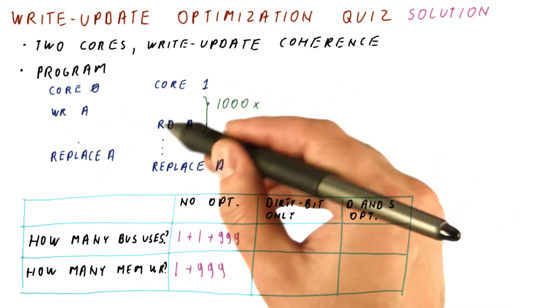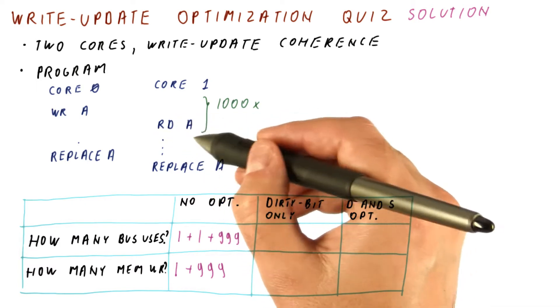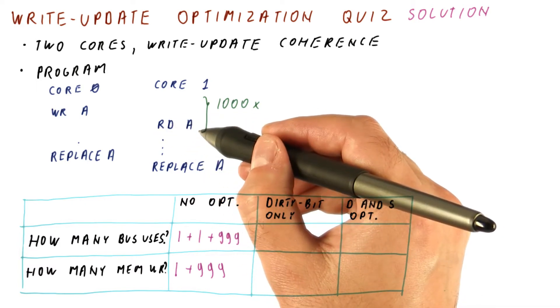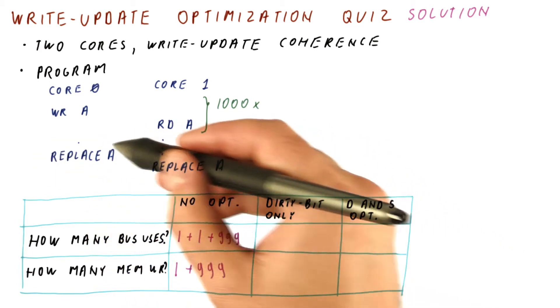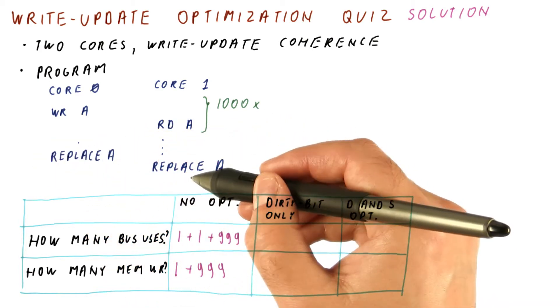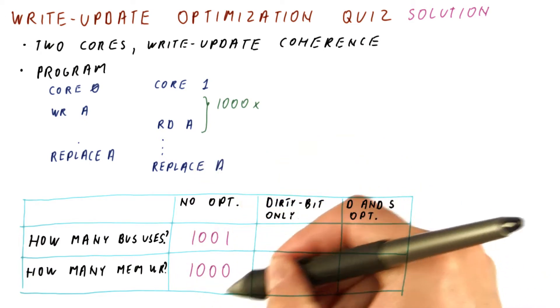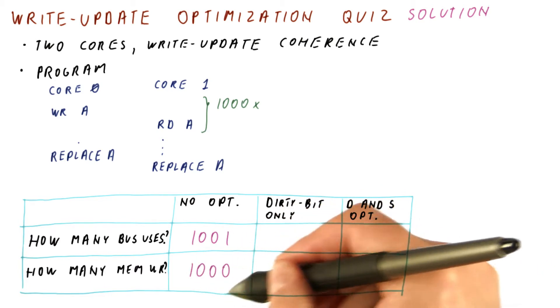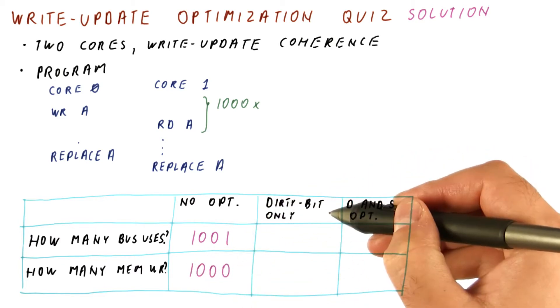Whereas reads are no longer going to be misses, and they find what they are looking for in the cache, so they're no longer going to either bus or memory. Eventually, these caches replace this, but nothing happens on the replacement in this case, because everything is already up to date. So overall here, we got 1001 bus uses and 1000 memory writes.